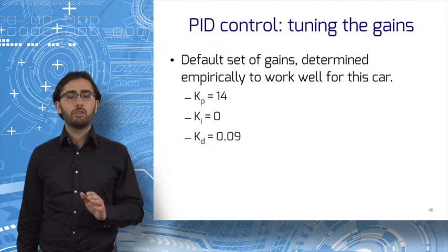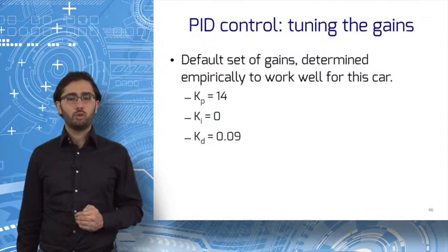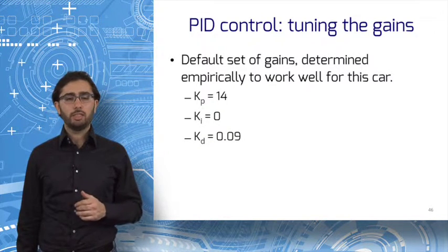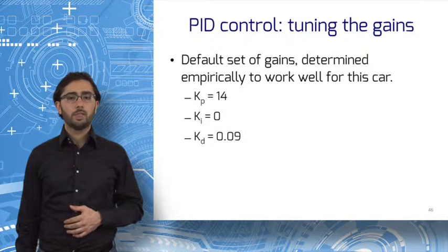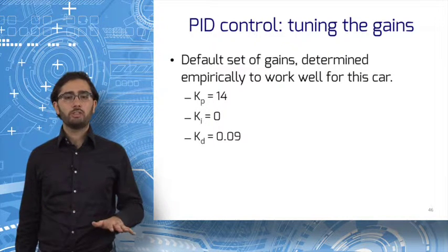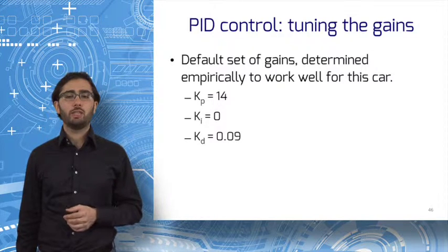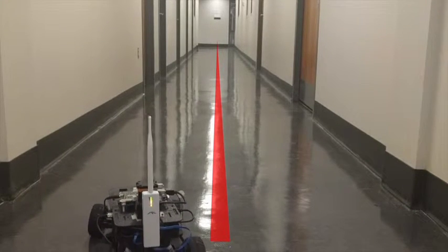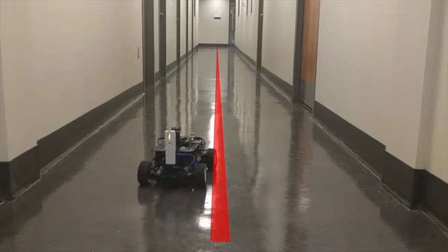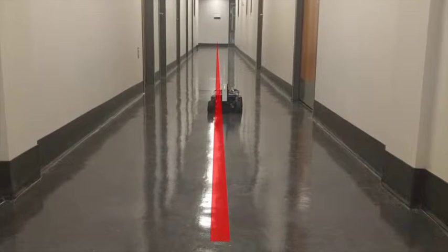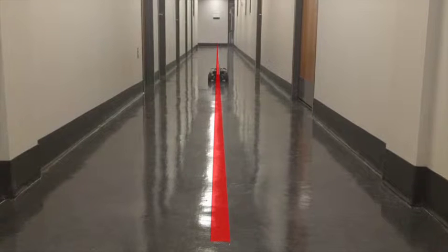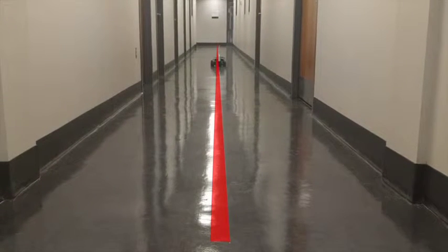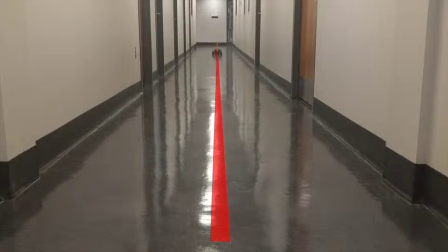Out of the box, the race car you get implements PD control with kp equals 14 and kd equals 0.09. Let's see a video of the car under PD control with the out of the box settings in the hallway outside our lab at Penn. The car starts off center and pointed left, corrects course pretty smoothly and without much overcorrection, and there it goes. Note how the overcorrection decreased compared to the first video. This is the effect of a larger kp and an added derivative control.